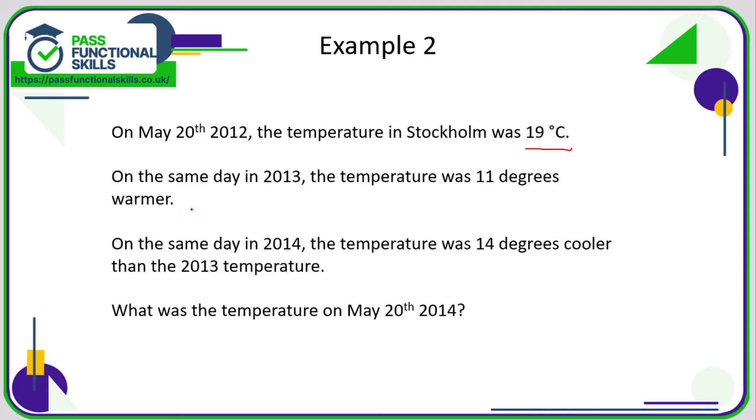Although it hasn't asked us a question, we can ask ourselves: what was the temperature on May 20th 2013? Well, it was 11 degrees warmer than 19, so all we need to do is 19 plus 11, and that is 30 degrees.